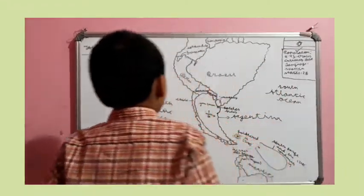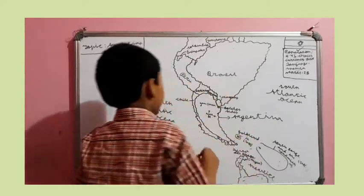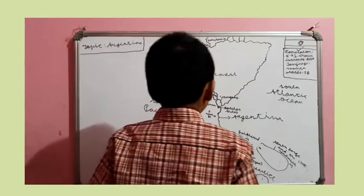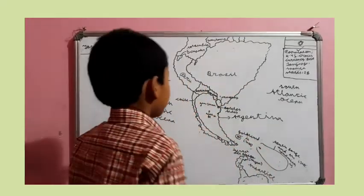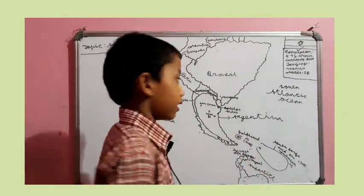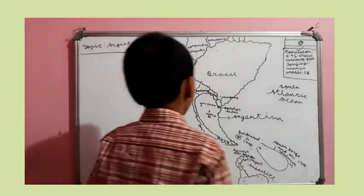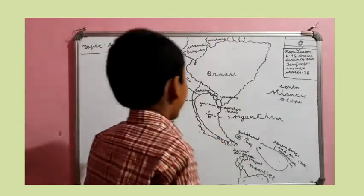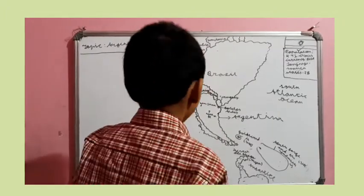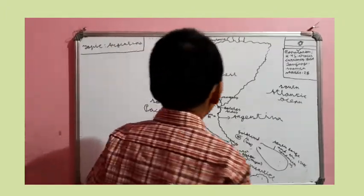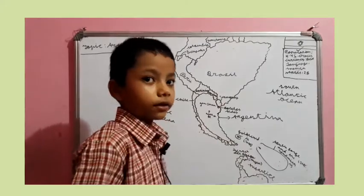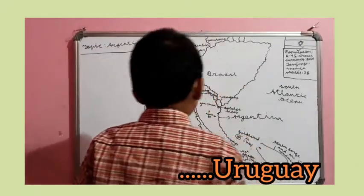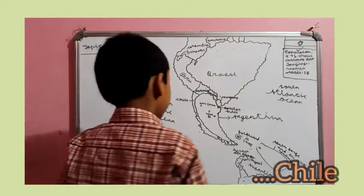Argentina borders Chile. Chile is long. Bolivia is above Argentina. Paraguay is bordering the panhandle of Argentina. Uruguay is in the East, bordering Argentina. Chile is at the West, bordering Argentina.